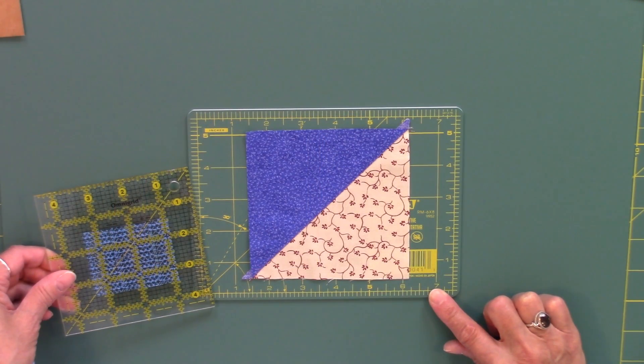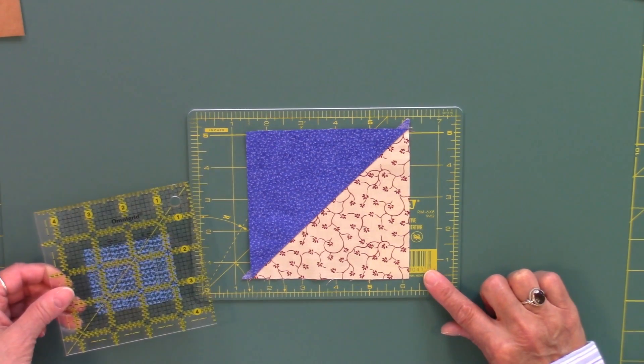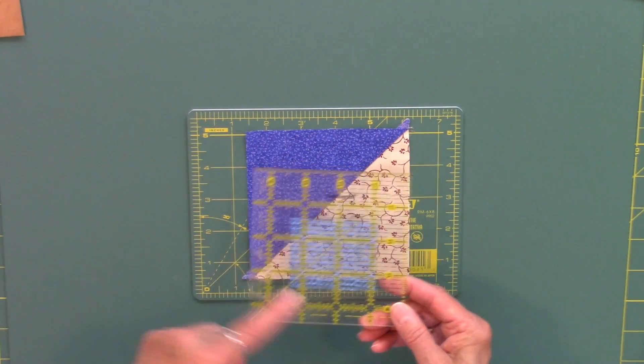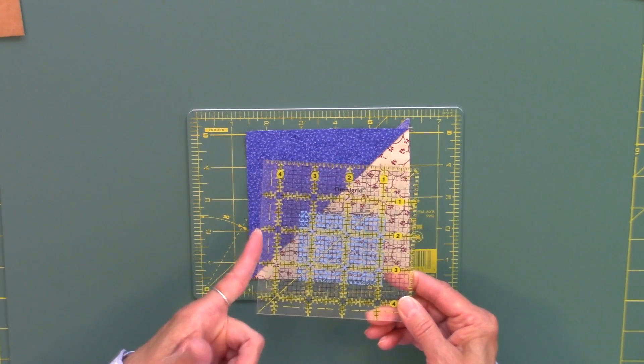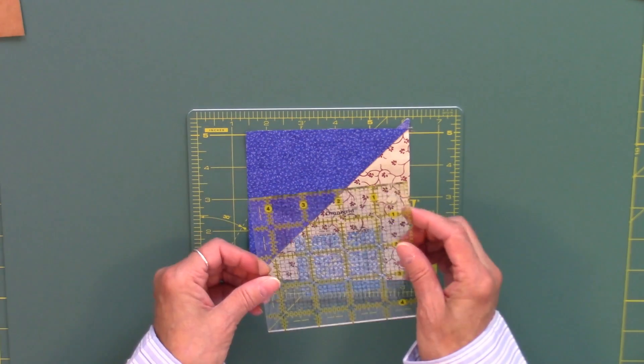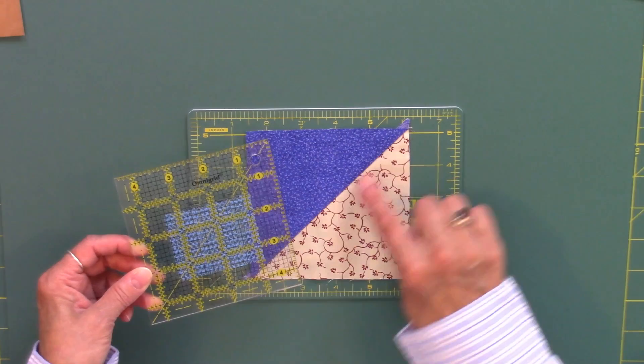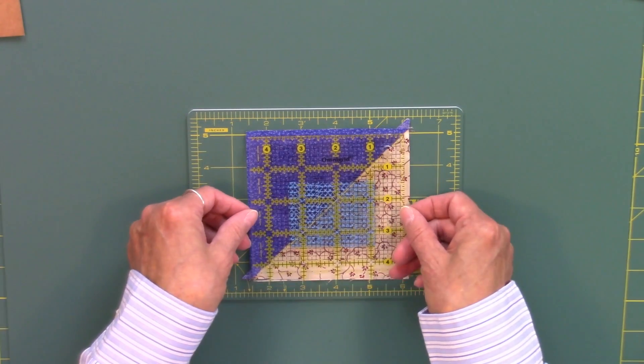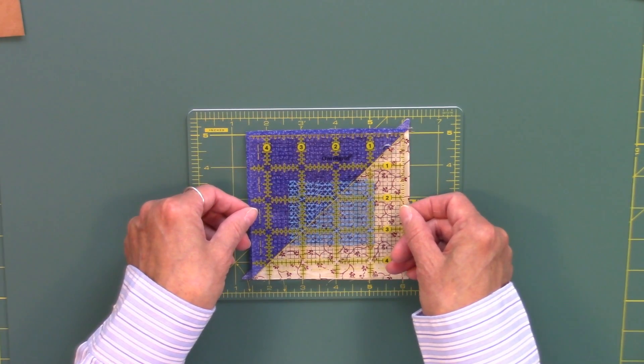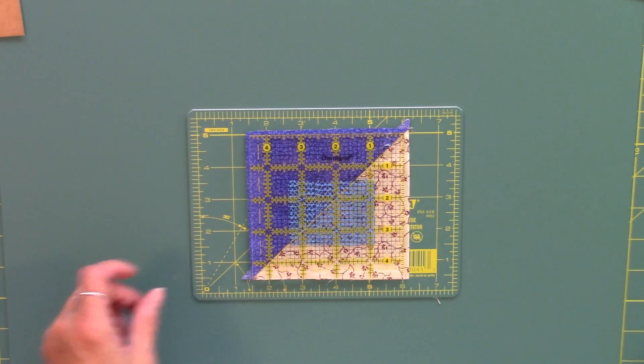Now it's time to trim them. I'm going to trim this to four and a half inches. The easiest way to do that is with a four and a half inch ruler and I have placed a piece of shelf liner on the ruler to help keep it in place. The diagonal line of the ruler is going to go on top of my diagonal seam line and the unit is going to extend past the ruler edges on all four edges.